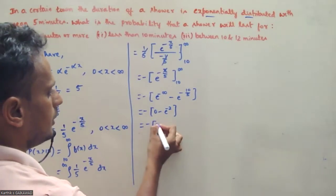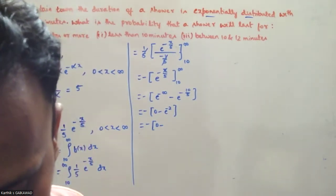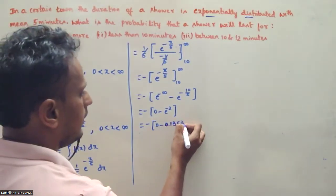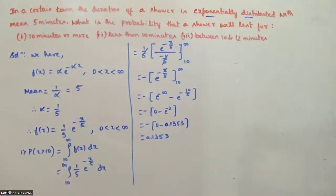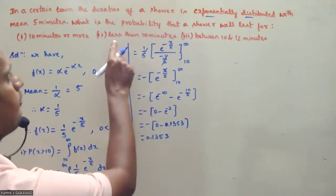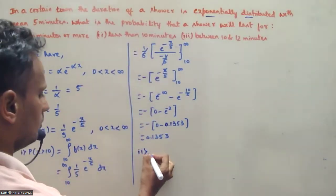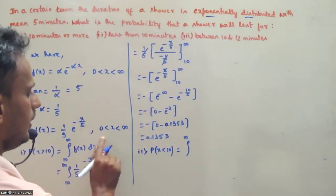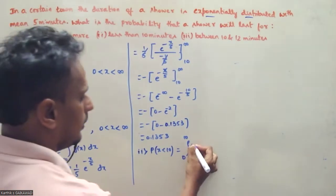So the result is minus (0 minus e^(-2)), which equals e^(-2). Using e^(-2) ≈ 0.1353, the final answer is 0.1353.